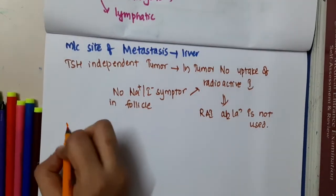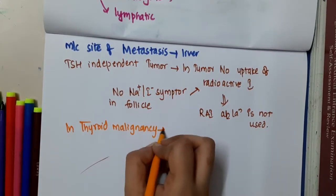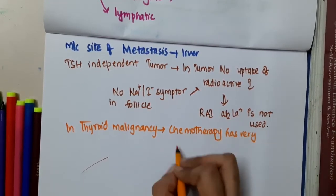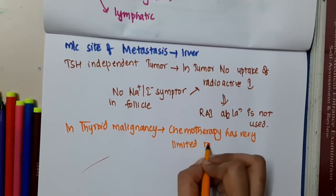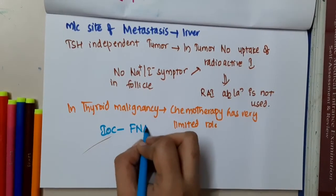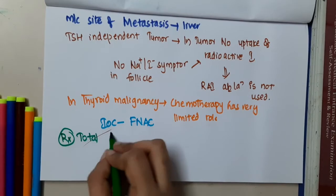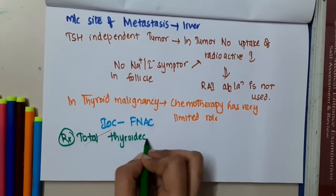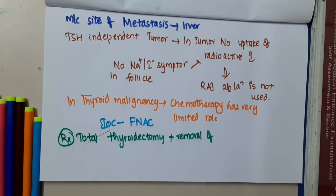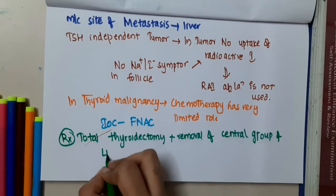In thyroid malignancy, chemotherapy has a very limited role. The investigation of choice for medullary carcinoma of thyroid is FNAC. For treatment, total thyroidectomy is done along with removal of the central group of lymph nodes, as it can spread through the lymphatic route. Central lymph node dissection is performed.